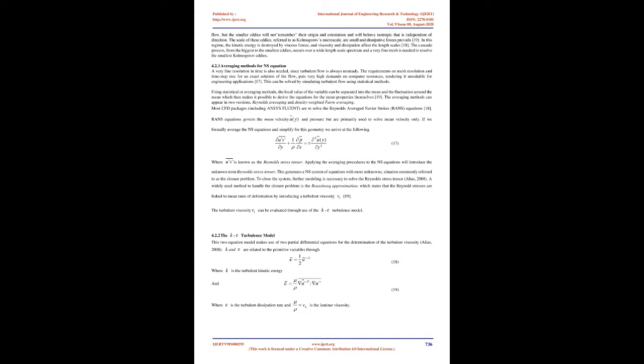The large-scale eddies have an orientation imposed by the mean flow, but the smaller eddies will not remember their origin and orientation and will behave isotropically — that is, independent of direction. The scale of these eddies, referred to as Kolmogorov's microscale, are small and dissipative forces prevail. In this regime, kinetic energy is destroyed by viscous forces, and viscosity and dissipation affect the length scales. The cascade process, from the biggest to the smallest eddies, occurs over a wide length scale spectrum and a very fine mesh is needed to resolve the smallest Kolmogorov eddies. A very fine resolution in time is also needed since turbulent flow is always unsteady. The requirements on mesh resolution and time step size for an exact solution put very high demands on computer resources, rendering it unsuitable for engineering applications.